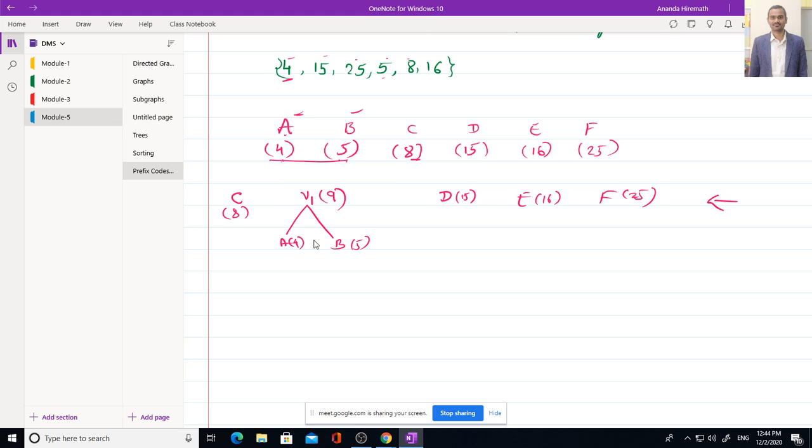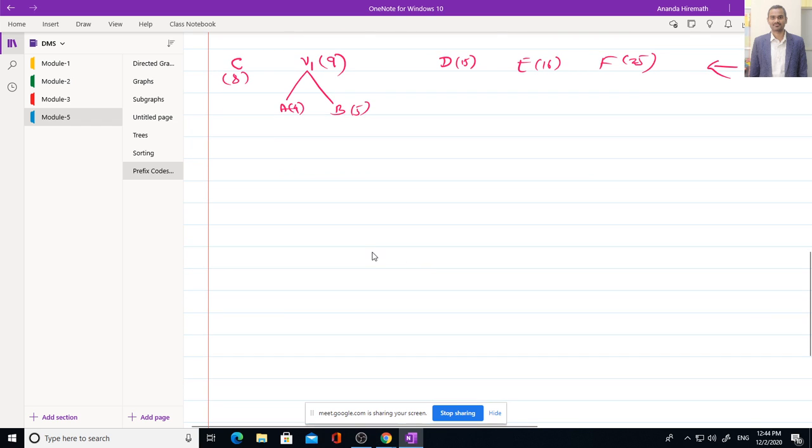Next time again, first two should be merged. C and V1. So 8 plus 9 will be 17 and let us denote it by V2 with weight 17. Again, we should rearrange them. 15 and 16 both come before V2. So I will write D first with weight 15, next node is E with weight 16, then V2. Remaining is F whose weight is 25.